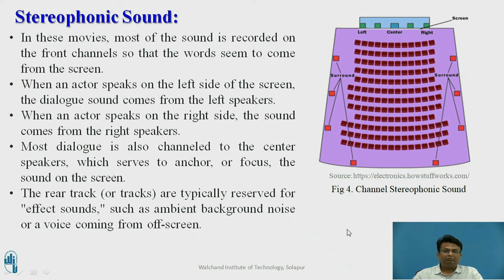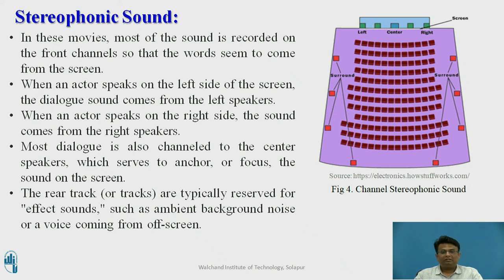In movies, most sound is recorded on the front channels so that dialogue seems to come from the screen. When an actor speaks on the left side of the screen, the dialogue comes from the left speaker; when on the right side, it comes from the right speaker. Most dialogue is also channeled to the center speaker, which anchors the sound to the screen. The rear tracks are typically reserved for effect sounds such as ambient background noise or voices coming from off screen.